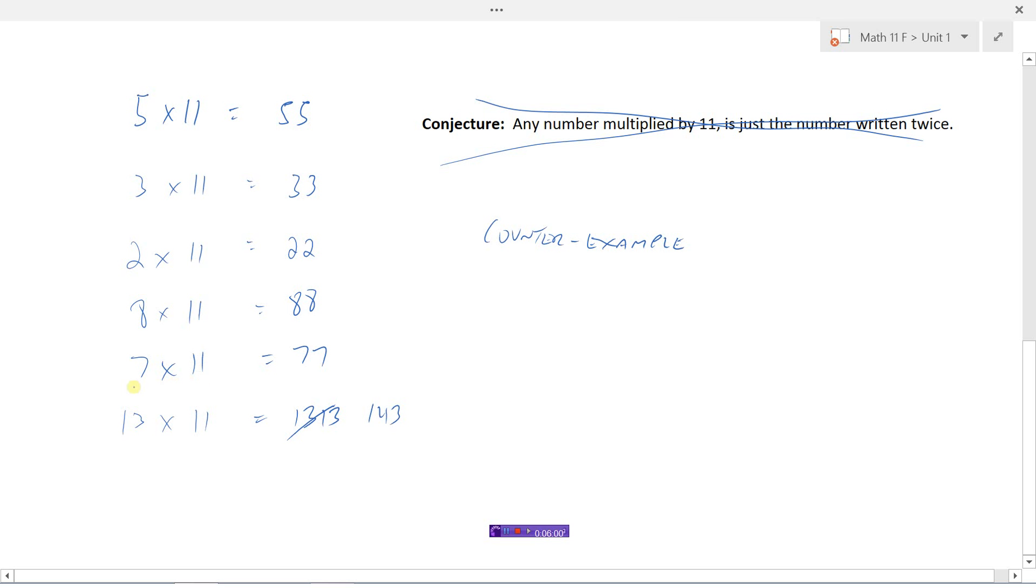I guess what I could say is my conjecture would work as long as I'm using whole numbers that are less than or equal to 9 or natural numbers rather less than or equal to 9. But as soon as I get into a 2 digit thing, this thing is not working. So I cannot say any number multiplied by 11 is just the number written twice.